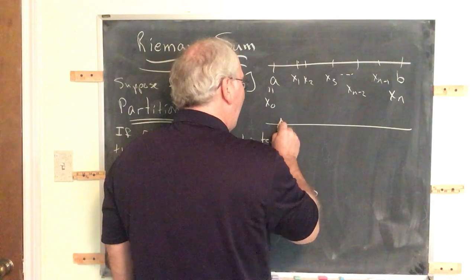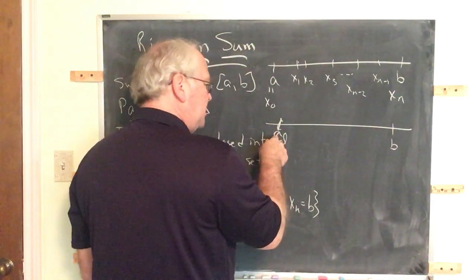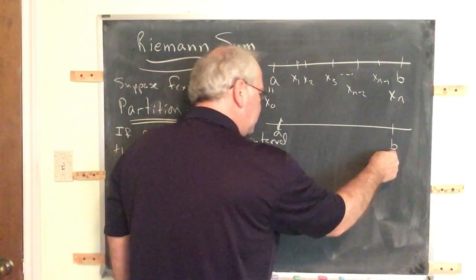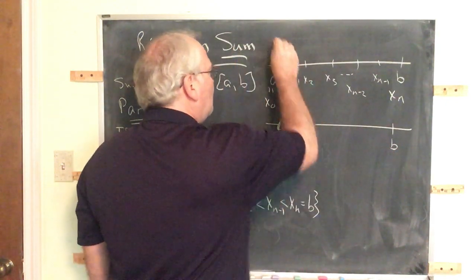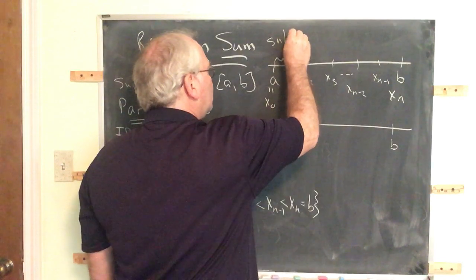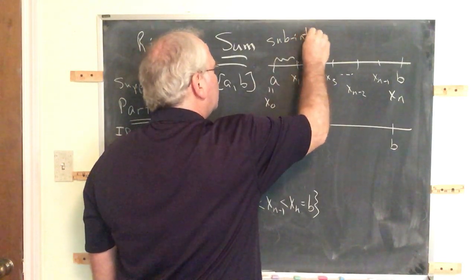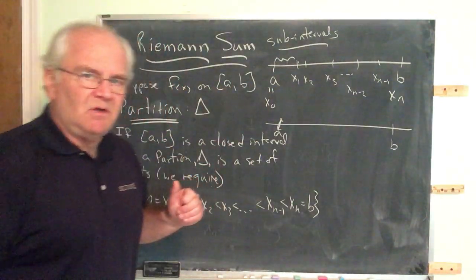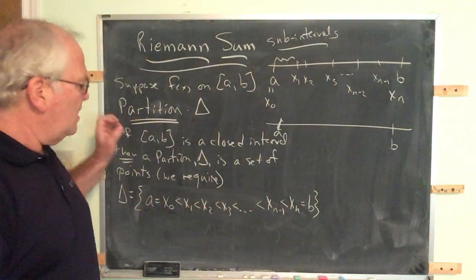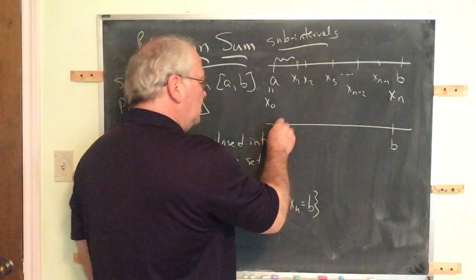As long as you have x0 equal to a and xn equal to b, we generate what are called sub-intervals. The number of sub-intervals you generate is irrelevant.